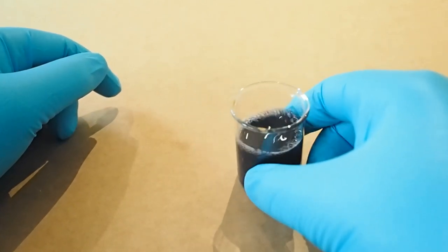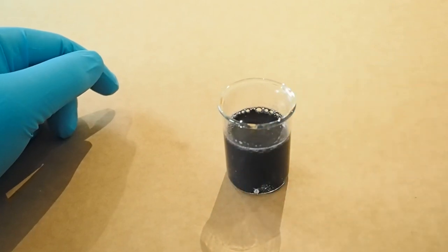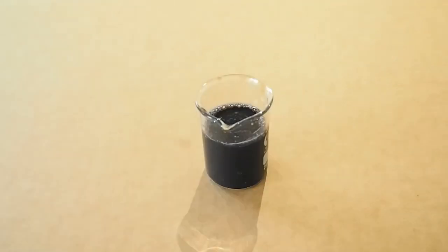And this is our ink. To stop things growing in our ink, we need to put something that will kill off any bacteria or fungi that might grow in there. So I'm just adding a few drops of vinegar.